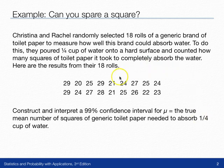So some of the rolls, it only took 21 or so, as low as 20 squares to absorb all the water, and some it took as many as 29.